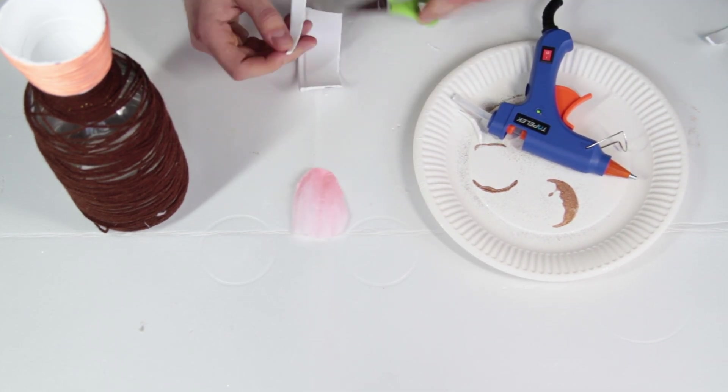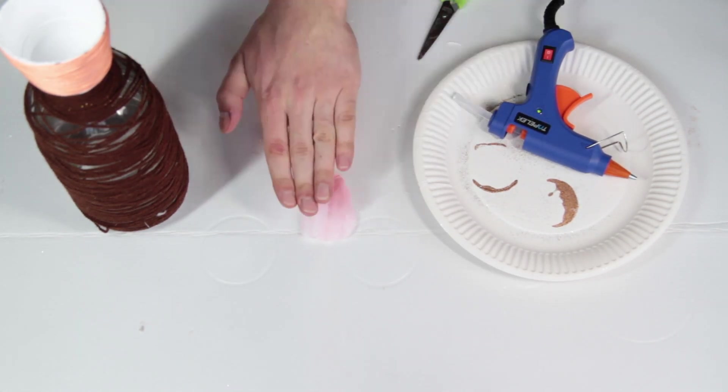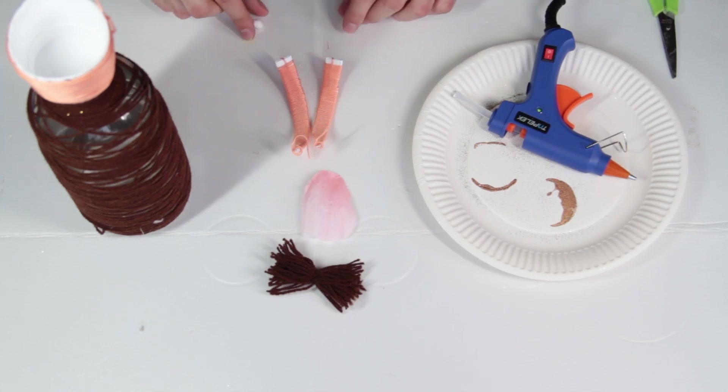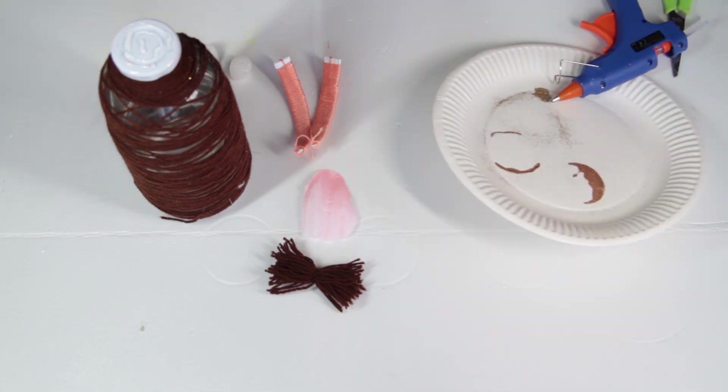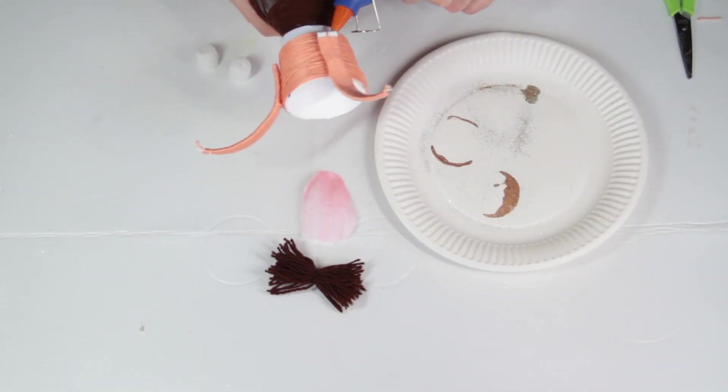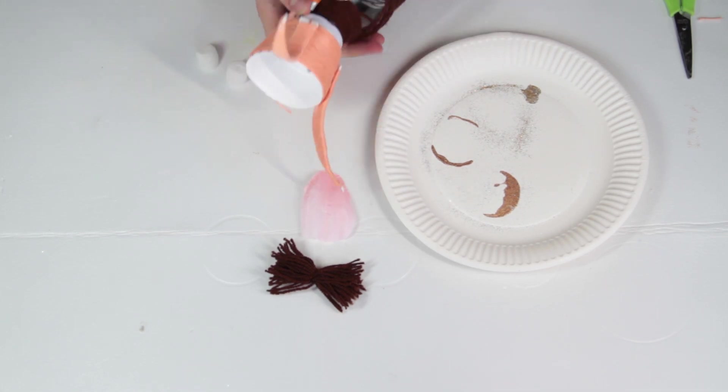The ears are actually made of the leftover from the cup. We wrap them again in the same color. Now we're going to take the eyes, put on some dots with just a marker, took some styrofoam, cut a little.